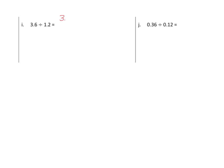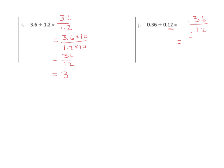Let's do a couple more examples. Rewriting as a fraction, we can see that our denominator goes to the tenths. So we write 3 and 6 tenths times 10 over 1 and 2 tenths times 10. That gives us 36 for the numerator, 12 for the denominator, and 36 divided by 12 equals 3. The next problem is 36 hundredths divided by 12 hundredths. We multiply both numerator and denominator by 100 — 36 hundredths times 100 over 12 hundredths times 100 — giving us 36 divided by 12, which again equals 3.